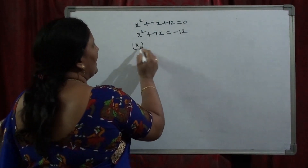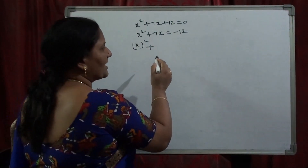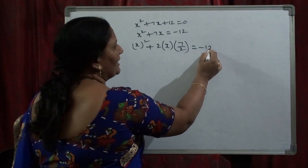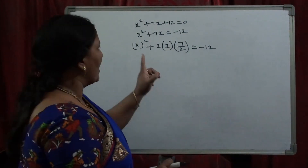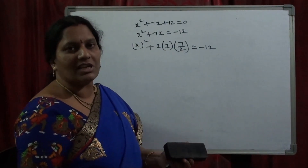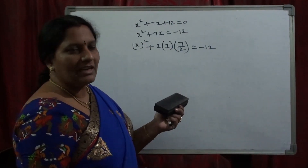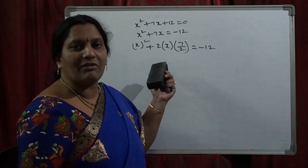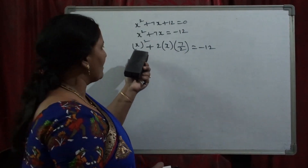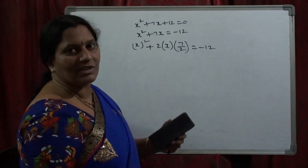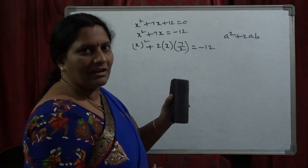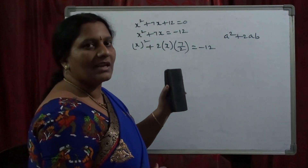Write x² as x whole square, and 7x can be written as 2·x·(7/2), with the other side equal to −12. If we observe LHS, it is in the form of a² + 2ab. For finding the roots by the complete square method, we should write LHS in the form of a² + 2ab + b² or a² − 2ab + b². So if we observe x² + 2·x·(7/2), it is in the form a² + 2ab, and adding b² makes it (a + b)².